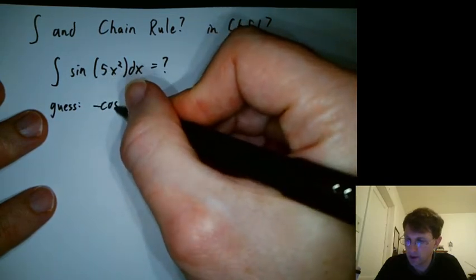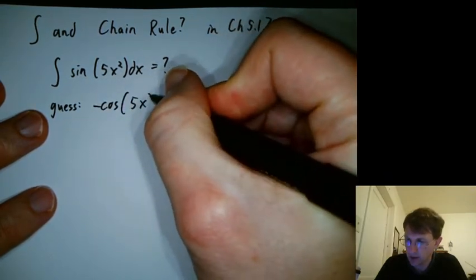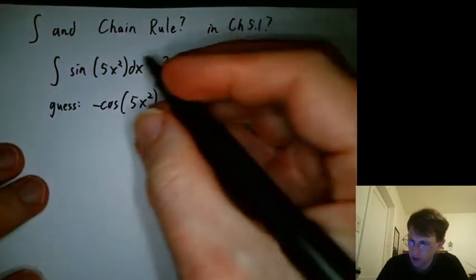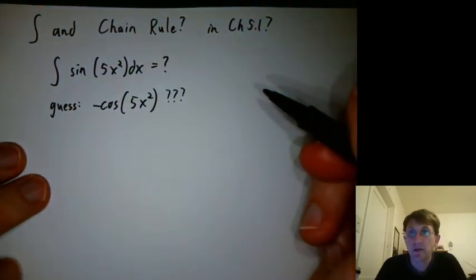Nope, it's negative cosine. And we might guess that we'd copy that. So that's not a bad guess. What do we do when we guess?